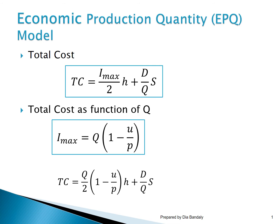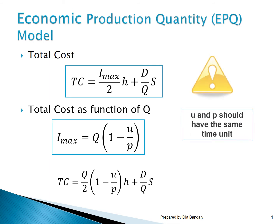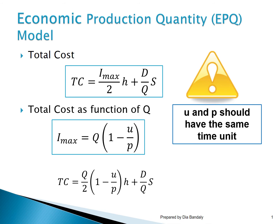There is something we need to be careful about: because we have a demand rate and a production rate in a ratio, we must always make sure they are expressed in the same time unit. Sometimes they are not, so we have to convert one of them. For example, if we are given a daily production rate but a weekly demand, we must convert one to match the other.